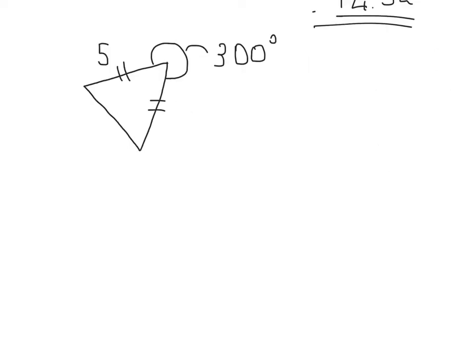It's a little different in this one. We're told that we've got an isosceles triangle, and that's denoted by these double lines here. So if that's 5, then this will also be 5. The angle outside of the triangle is 300 degrees, which means the angle in here must be 300 from 360.